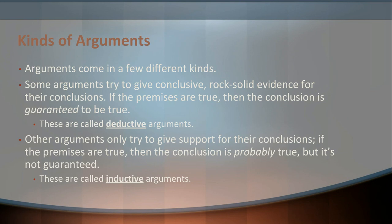A couple of other terms we can use to try and pin down arguments are these broad categories. Some arguments try and give conclusive, rock-solid evidence for the conclusions — set up so that if the premises of that argument are true, then the conclusion is guaranteed to be true. These are things we call deductive arguments. Other arguments only try and give some amount of support for the conclusion — they give you good reasons for thinking the conclusion is true, but they don't guarantee it. These we call inductive arguments.